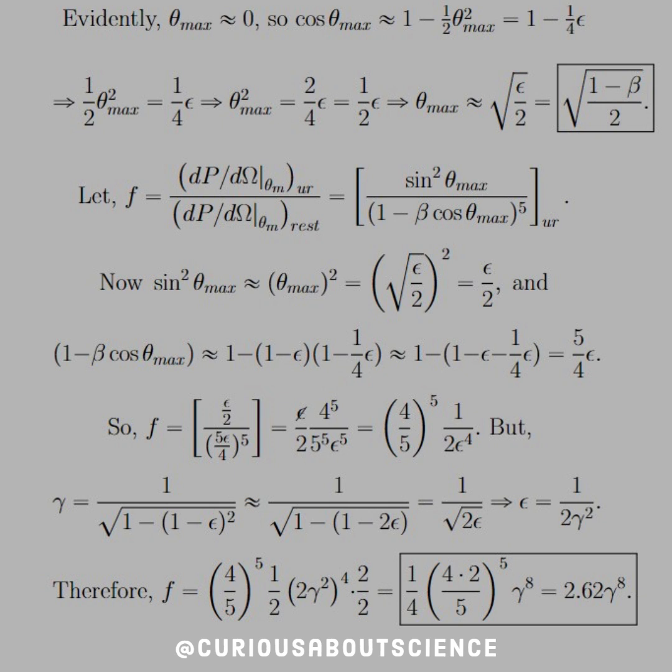And we're writing 2 over 2, just so we can put another factor of 2 in that fifth power bracket. And what we see is we have 1/4 from the 2 over 2s, or the denominators of 2s, 4 times 2 over 5 to the fifth power, times gamma to the eighth. So if we simplify that to a decimal, we get 2.62 gamma to the eighth. And we're done.